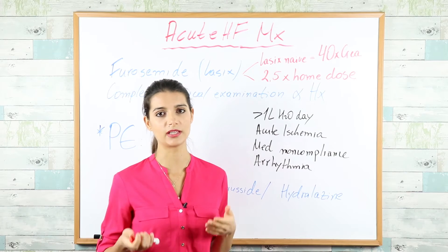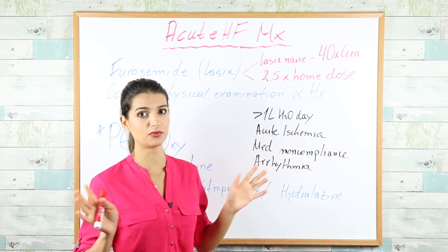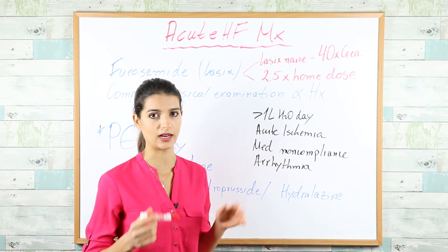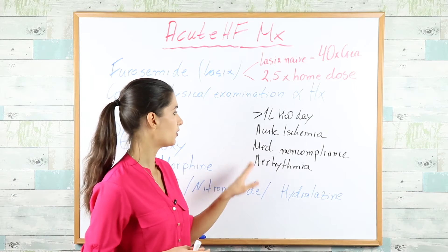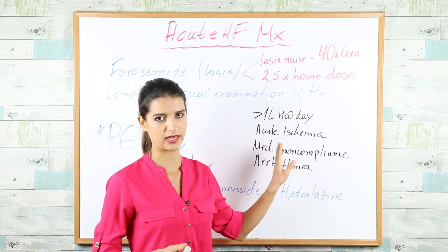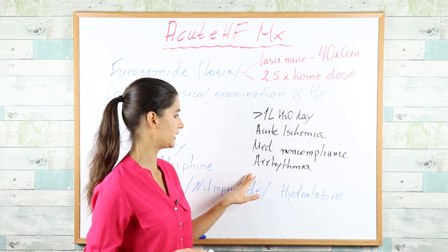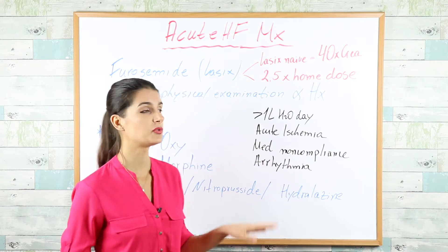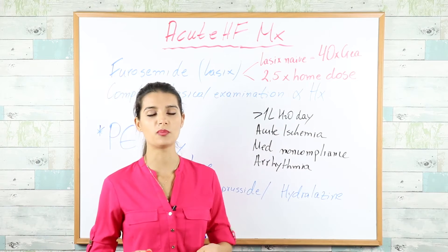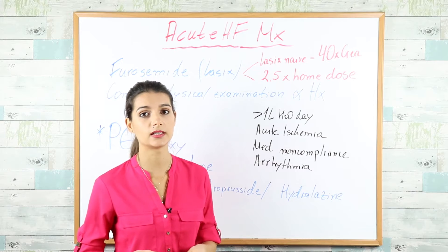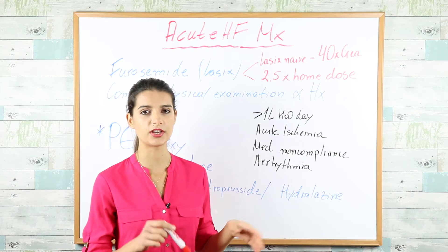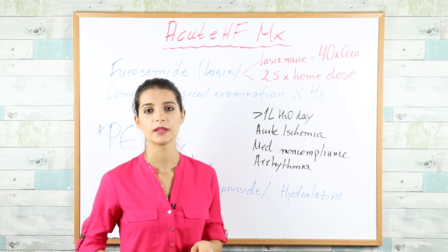Most patients present with acute exacerbation due to several main reasons: drinking more than the allowed one liter of fluids per day, acute ischemia, medication non-compliance, or arrhythmia. Apart from furosemide, perform a complete physical examination and history to look for possible etiologies. Monitor electrolytes frequently, as furosemide side effects include hypokalemia and hypomagnesemia.